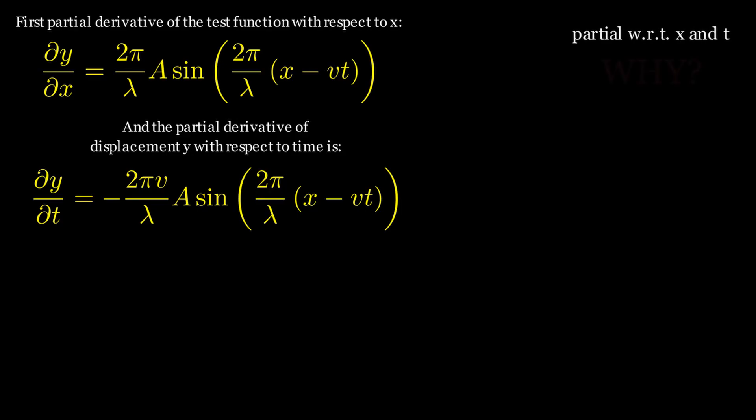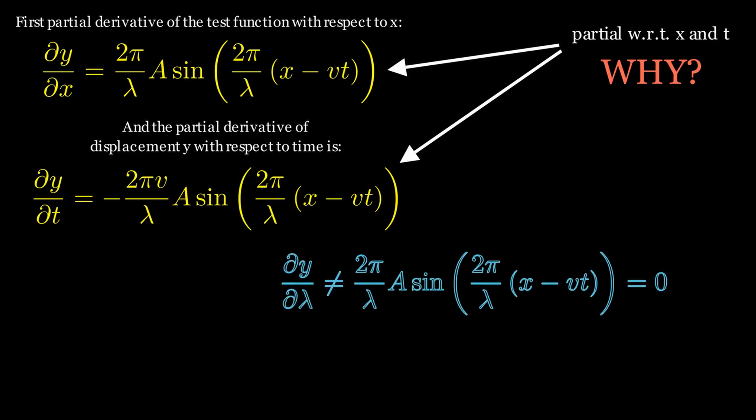Why did I calculate partial derivatives of displacements in terms of time and position only? I would like to be completely honest here. If I take the derivative of any other quantity, its derivative is zero because they are all constants.